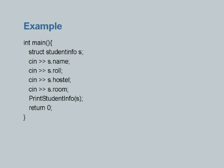Since there are multiple components and you could declare many variables s1, s2, s3, etc., you must be able to identify a component belonging to one of those variables. The way you do that is by using a dot — called a qualifier. s.name means the name component of the variable s. s.role means the role component of the variable s.